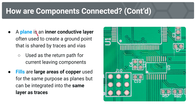We have planes — interconnected layers that are often used to create a ground point shared by traces and vias. These are used as the return path for current leaving components. A ground pin pad is likely connected to a via, which goes straight to a ground plane — a large area of copper where the entire layer serves as one single ground point. We also have fills: large areas of copper used for the same purpose as planes, but integrated into the same layer as traces.